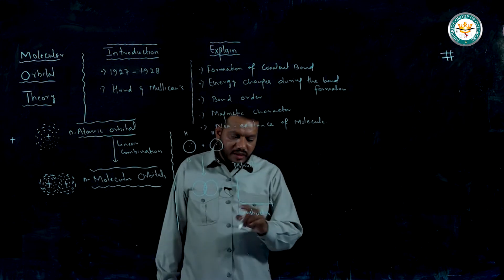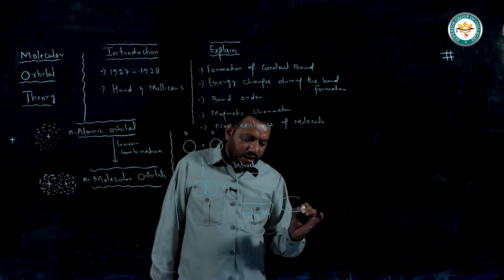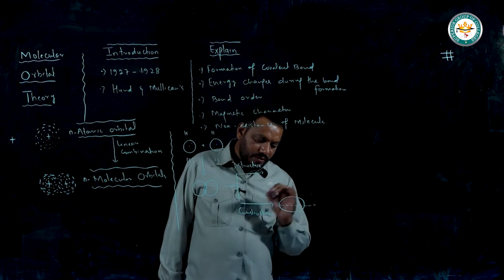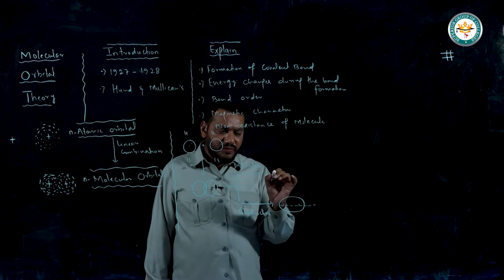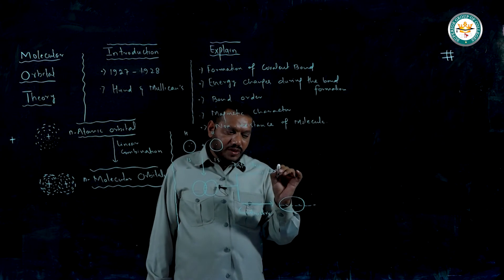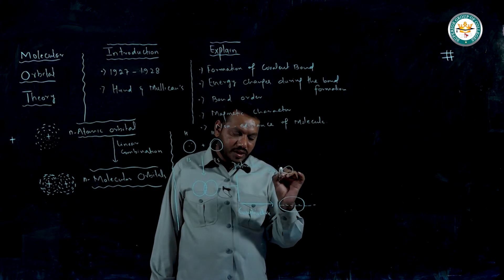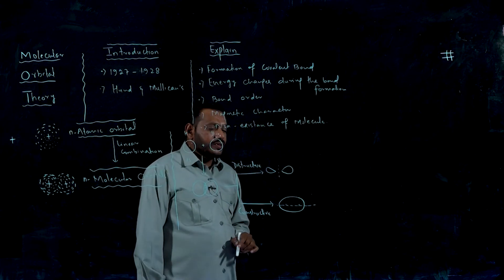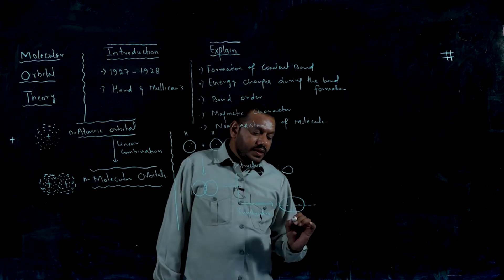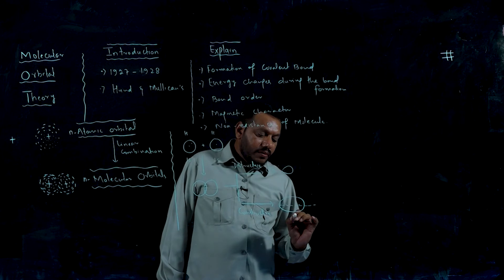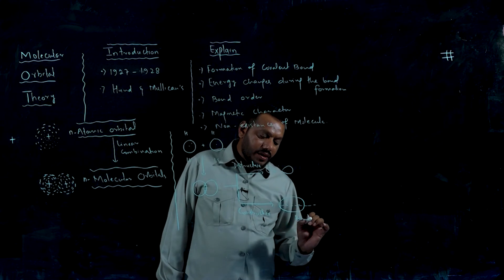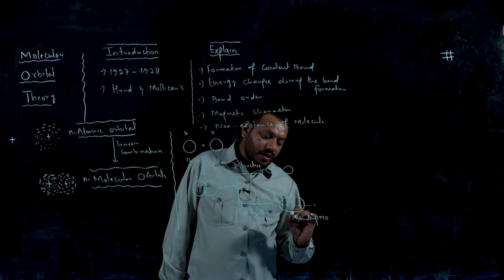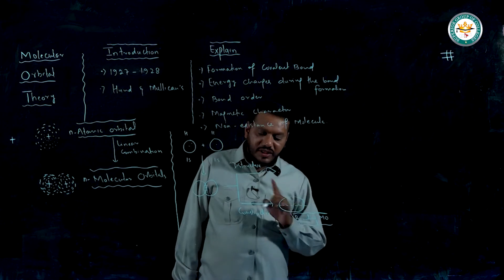If the overlap is constructive, then the electron density is more around the bond axis. This is what we call bonding molecular orbitals.